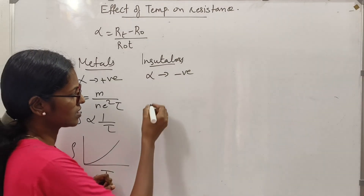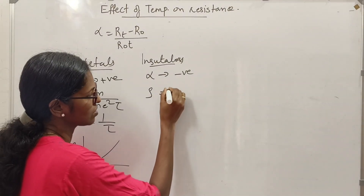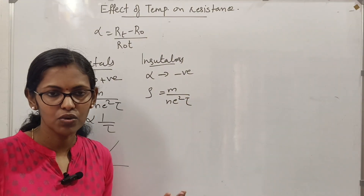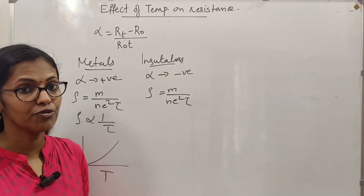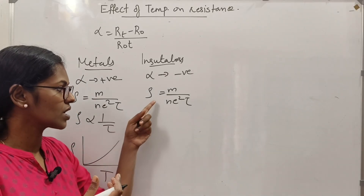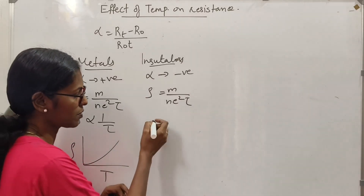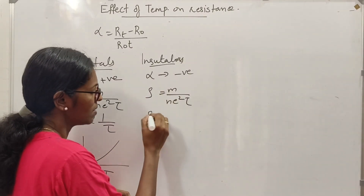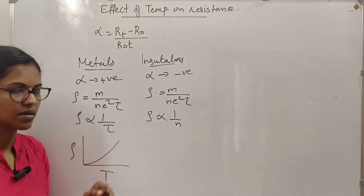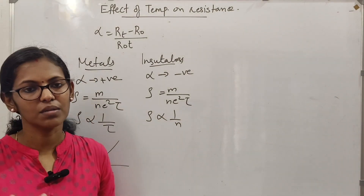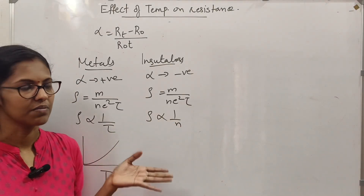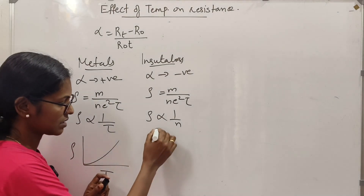For insulators, rho is equal to m divided by n e squared tau. Here, n is the number of free electrons. As temperature increases, the number of free electrons increases, so resistivity decreases. This is called the negative temperature coefficient of resistance.